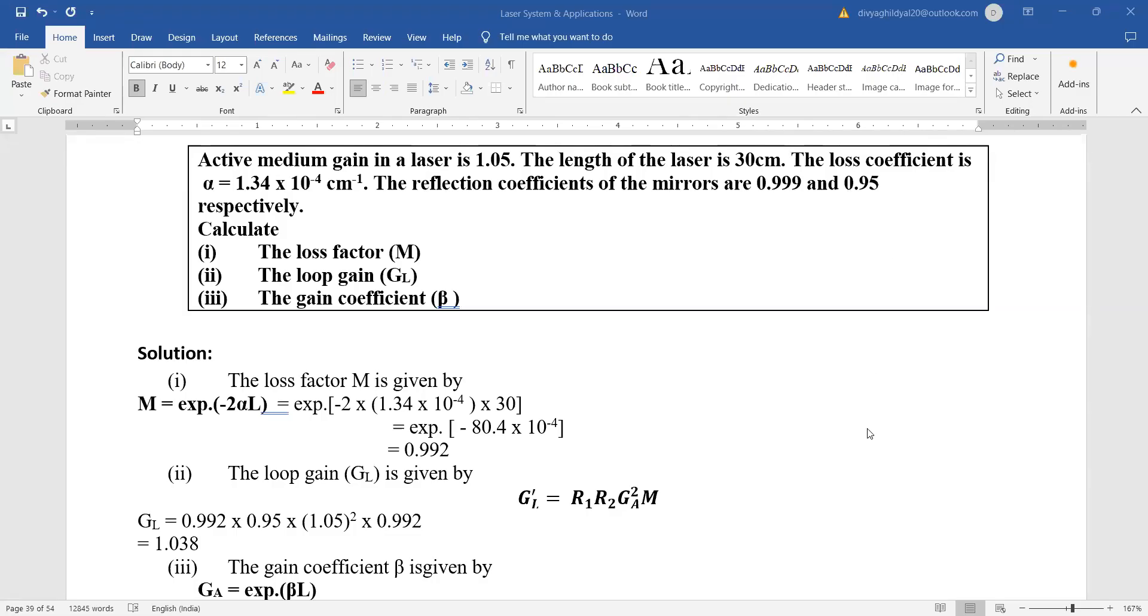Let us discuss a numerical on medium gain. Active medium gain in a laser is given as 1.05. Length of laser has been given as 30 centimeter.